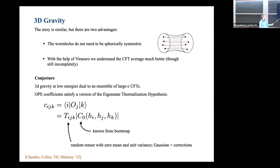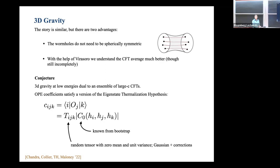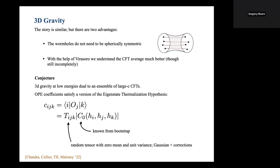The statistics are a version of the eigenstate thermalization hypothesis (ETH). ETH tells us we should treat OPE coefficients as smooth functions times random variables. In this case, we have an OPE coefficient for three primaries labeled i, j, k. The natural ETH analog is: there's a smooth function of energies called C_0, and then a random tensor T_{ijk} with zero mean and unit variance. The smooth function depending only on the weights is known from the conformal bootstrap.